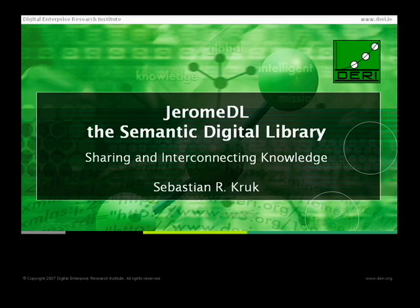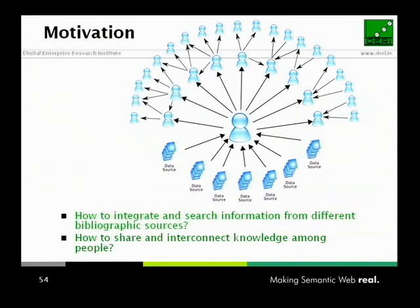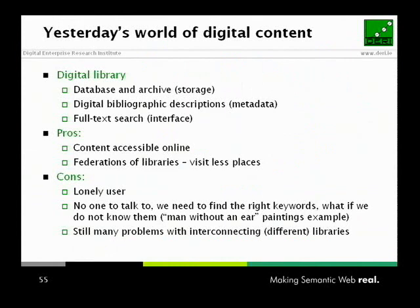What I'd like to show you is the problems we have about sharing and interconnecting knowledge, and how they can be solved with the techniques presented before. If we look at knowledge we're trying to acquire using internet techniques, there are two problems. First, how to aggregate and interconnect all the different sources coming from different places. Second, how to actually share this knowledge with the larger community and learn from it. I'll present this in one specific field — digital libraries — because libraries are the largest, oldest source of information. Before the internet, there were always libraries — a place where you learned things.